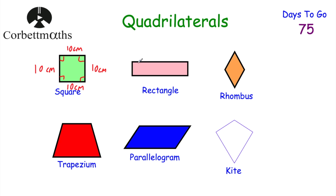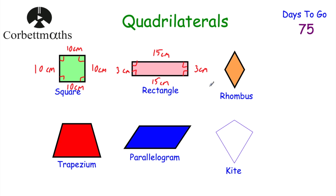A rectangle also has four right angles. The opposite sides have the same length — for instance, 15 centimetres top and bottom, and 3 centimetres on each side. It has two lines of symmetry — vertical and horizontal, but not the diagonals — and rotational symmetry of order two.